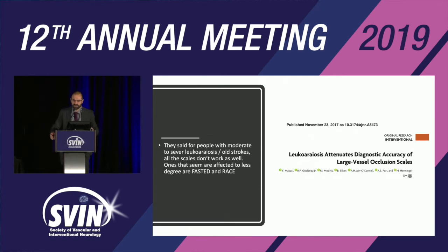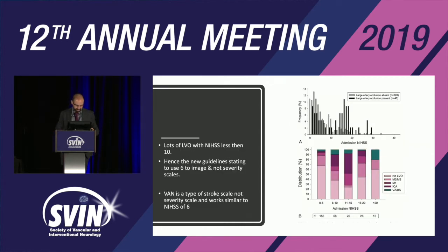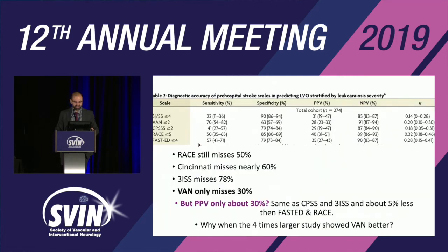Another group confirmed that using severity-only scales means missing LVOs. The UMass group found that if you use old leukoaraiosis data with FAST-ED or RACE, the severity scales perform better for specificity, but still miss large numbers of LVOs with NIHSS less than 10. According to them: RACE misses 50% of LVOs, Cincinnati misses 60%, 3-item stroke severity scale misses 78%, while VAN only misses 30%.